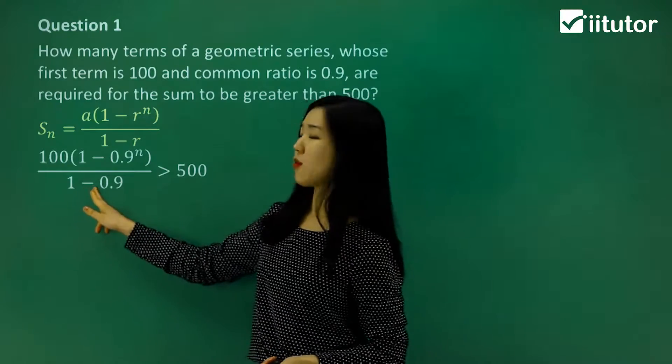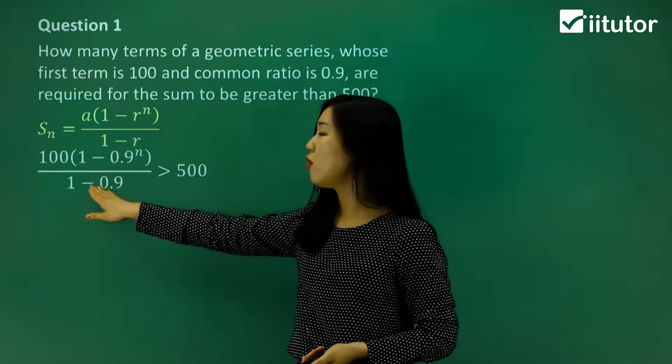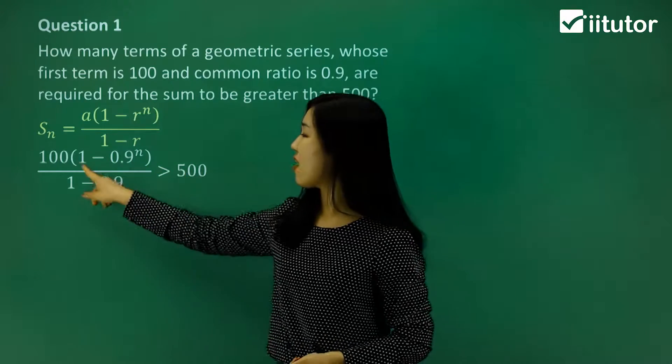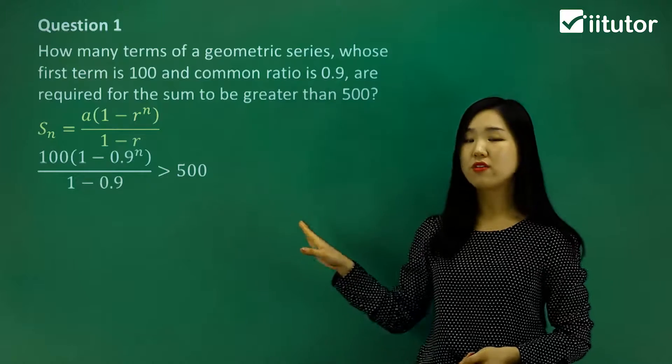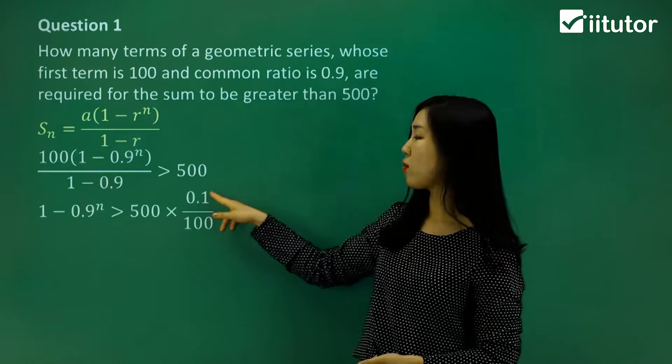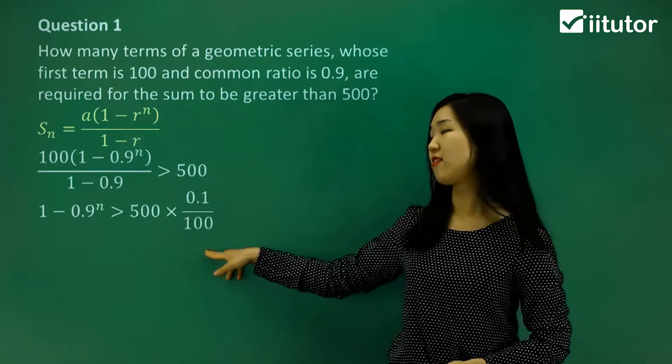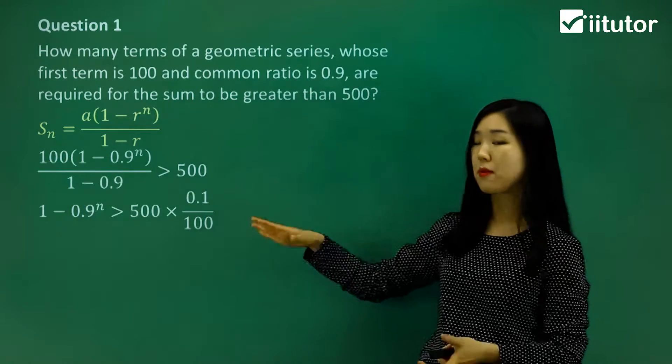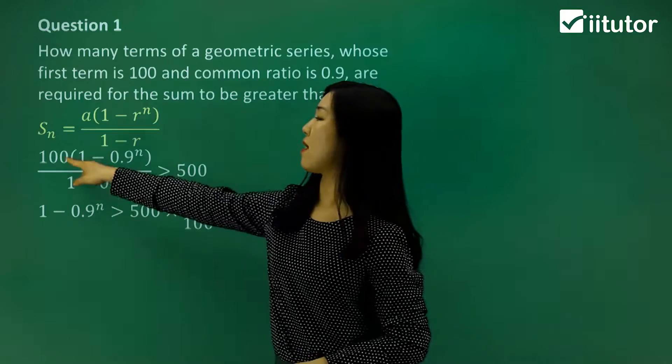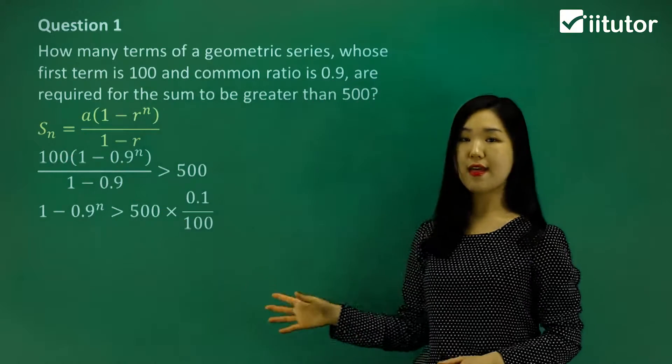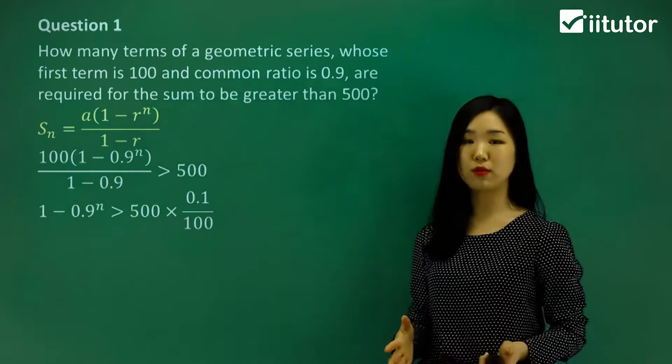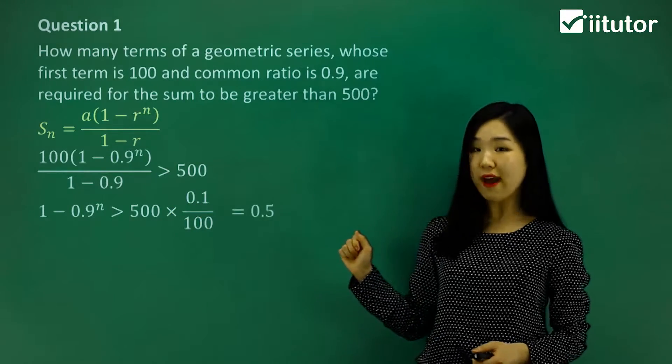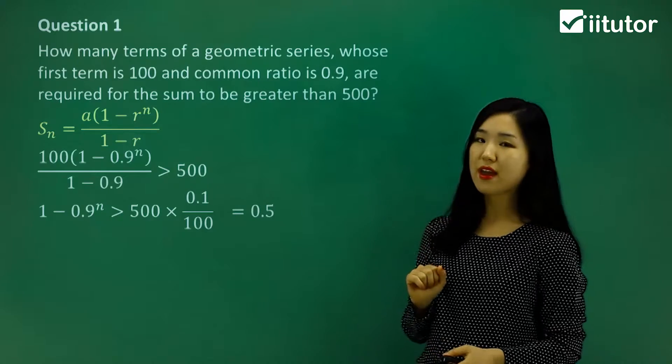You can see that 1 minus 0.9 is 0.1. So I'll multiply the 0.1 over to the other side. And see how the 100's there as well? I'll divide it by 100 as well. So basically, I'm multiplying by 0.1 over 100, and that just eliminates the 0.1 and the 100. So multiply by the denominator 0.1 and then divide by the coefficient of 100. And if you can simplify this right-hand side, you should probably get 0.5. So just simplify on your way as you go.